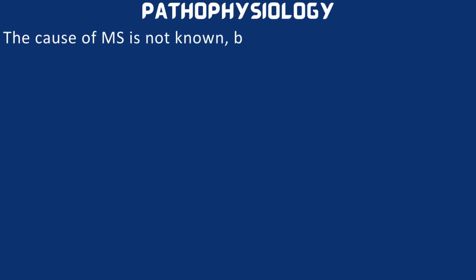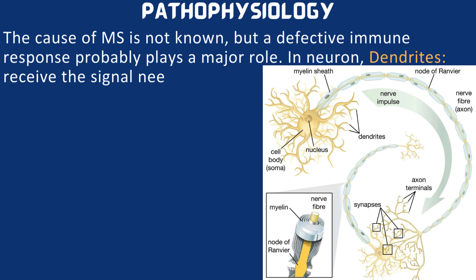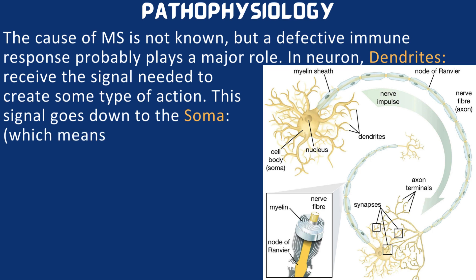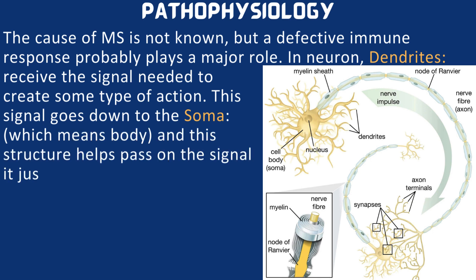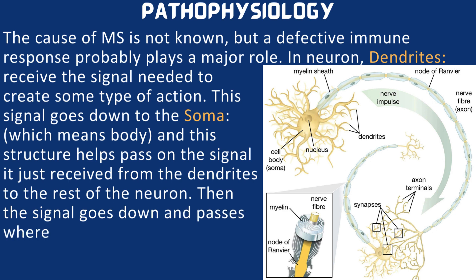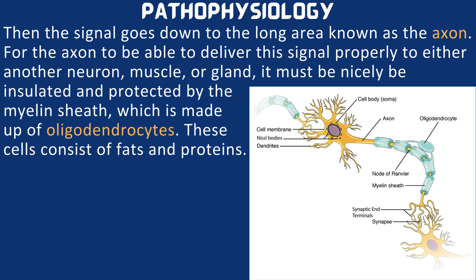The cause of multiple sclerosis is not known but a defective immune response probably plays a major role. In a neuron, dendrites receive the signal needed to create some type of action. This signal goes to the soma, which helps pass the signal from the dendrite to the rest of the neuron. The signal then passes through the axon hillock and down the long area known as the axon. For the axon to deliver this signal properly to another neuron, muscle, or gland, it must be insulated and protected by the myelin sheath, which is made up of oligodendrocytes.